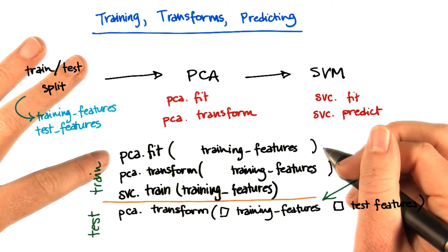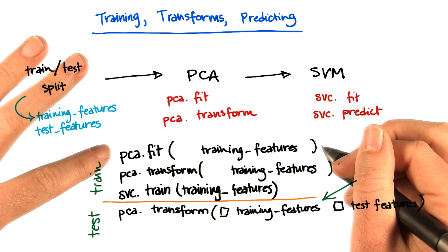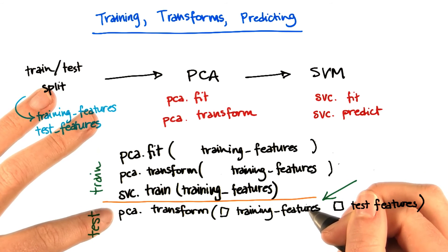So that means using the same principal components that I found in the training features and representing my testing features using those principal components.